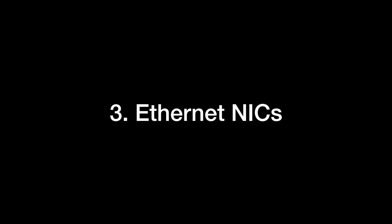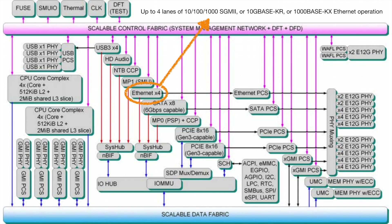I'm a networking person, so in the final section of this video, let's talk about the Zen feature that gets no respect: the NICs. Zen 1 has four 10-gigabit ethernet NICs built into the die, and they're probably also in Zen 2 because why take them out? To use these NICs, you have to give up some PCIe lanes, but if you were going to use those lanes for a NIC anyway, it doesn't matter.